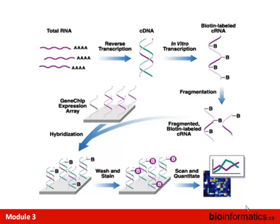The overall experimental procedure for an Affymetrix array starts with total RNA, which is reverse transcribed into cDNA, then in vitro transcribed into biotin-labeled cRNA. Biotin provides a capturable handle — something that allows you to do strong tagging to fix things downstream.